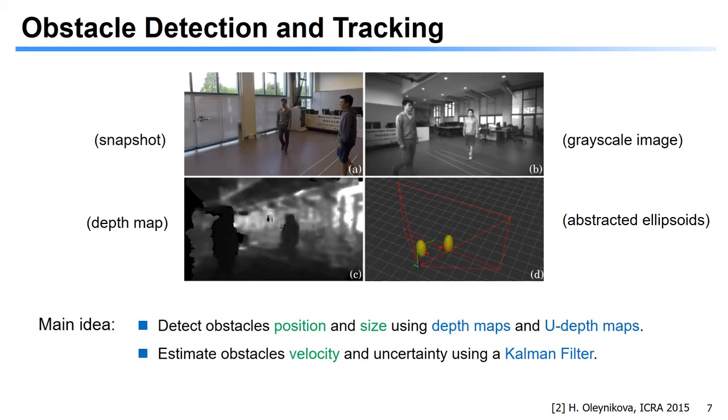Now we describe our obstacle detection and tracking algorithm. The main idea is to detect the obstacle position and size using onboard camera depth images and the generated U-depth maps, and then estimate the obstacle velocity as well as uncertainty using a Kalman filter. In this slide, the figure shows a snapshot of an experiment, the onboard camera depth map, and the two detected moving obstacles.